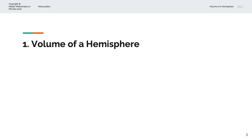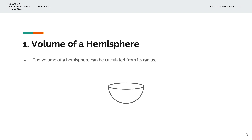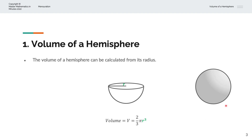What is the volume of a hemisphere? The volume of a hemisphere can be calculated from its radius. Visually, we have a hemisphere with radius r, and the volume is equal to V = 2/3 × π × r³. Recall that a sphere is a three-dimensional ball, and with radius r, the volume of a sphere is given by 4/3 × π × r³. So the volume of a hemisphere is half the volume of a sphere.